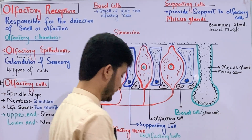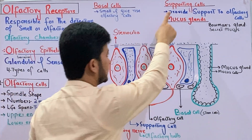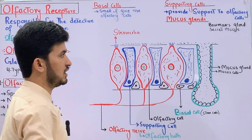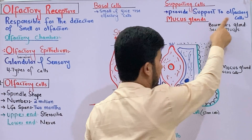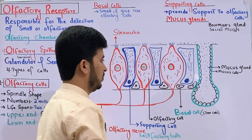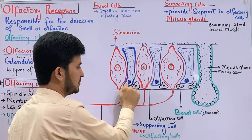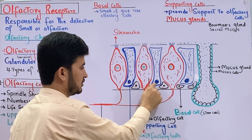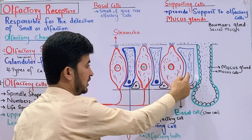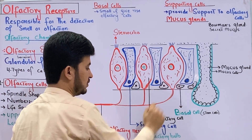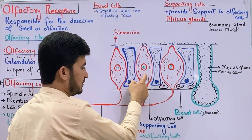The third type of cell in the olfactory epithelium is supporting cells. Supporting cells are columnar in shape, with the nucleus located at the top. Their function is to provide support to the olfactory cells.